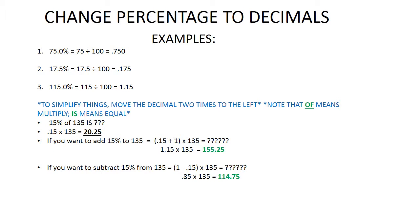If you wanted to add fifteen percent to thirty-five, you go point fifteen plus one times one thirty-five, which equals one hundred and fifty-five point two five.